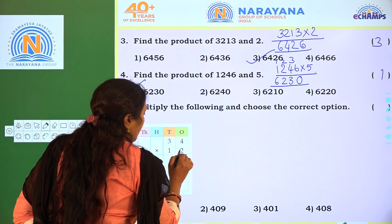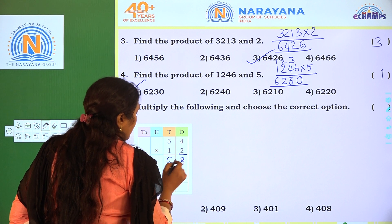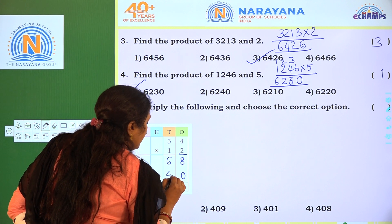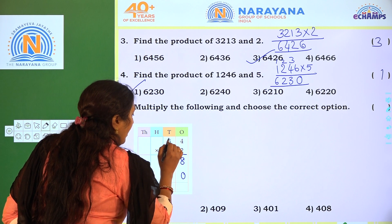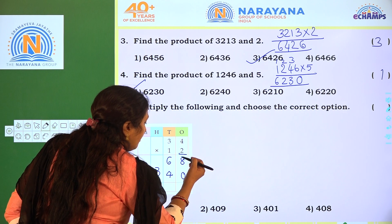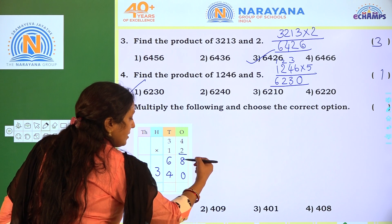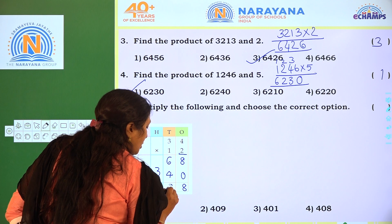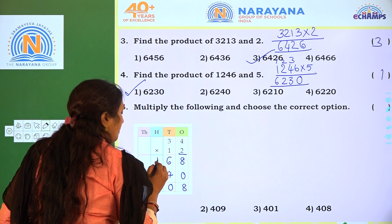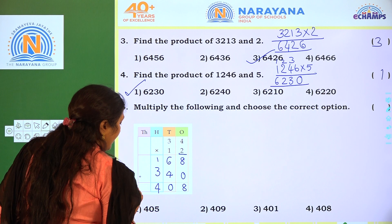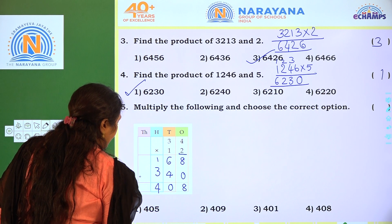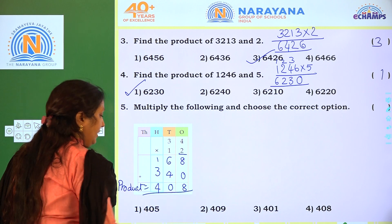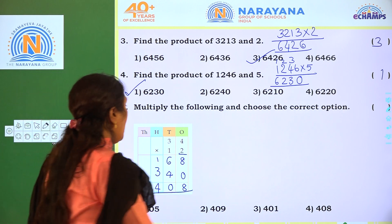2 4's are 8, 2 3's are 6. Now the 1's place should be 0. 1 4 is 4, 1 3 is 3. Add these two numbers: 8 plus 0 is 8, 6 plus 4 is 10 — write 0, 1 regrouping, 1 plus 3 is 4. The product is 408. The correct option is option 4.